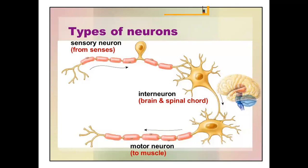The diagram shown here illustrates the types of neurons found in our body. Neurons are mainly of three types: sensory neuron, interneuron, and motor neuron. Let me explain what these are.